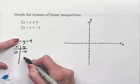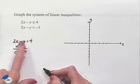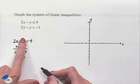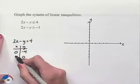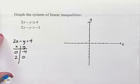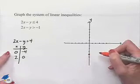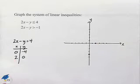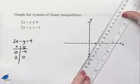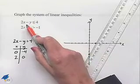That gives us y equals negative 4. If we let y equal 0, we have 2x equals 4, giving us x equals 2. Let's plot both of those points: (0, -4) on the y-axis and (2, 0) on the x-axis. Now we're going to draw in the line.